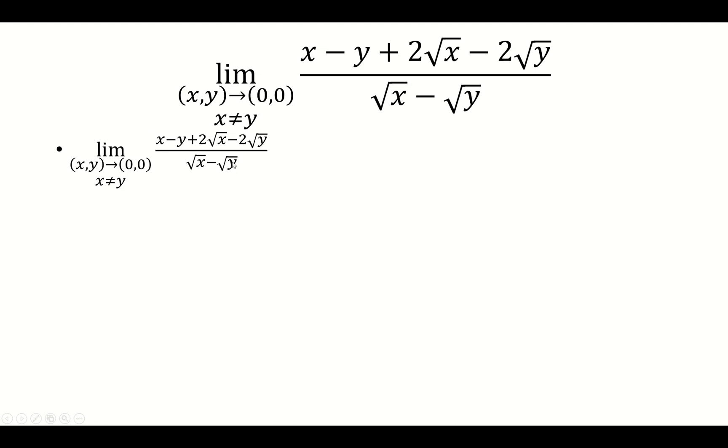So why don't we factor out the x minus y. For that one, you want to treat it as a squared minus b squared. So that's just going to be a minus b times a plus b.